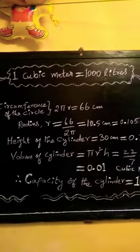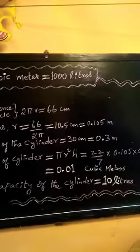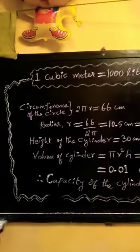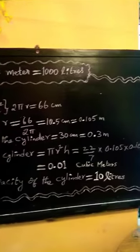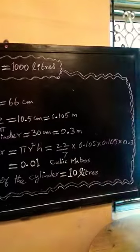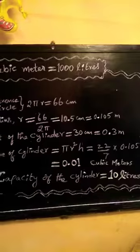Height of the cylinder is 30 cm, that is equal to 0.3 meters. Volume of the cylinder is πr²h, which equals 22/7 × 0.105 × 0.105 × 0.3, that is equal to 0.01 cubic meters.